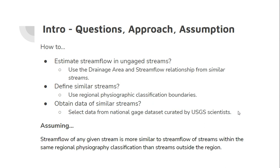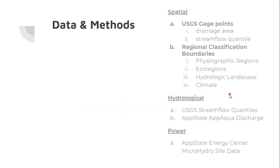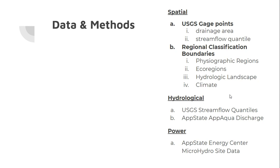To obtain data from similar streams, I found a nationwide gauge dataset curated by USGS that has stream flow statistics attached to each gauge point. The key assumption is that stream flow of any given stream is more similar to stream flow of streams within the same regional physiography classification than streams outside of that classification. I use spatial, hydrological, and power data — including that USGS gauge point dataset, regional classification boundaries, and hydrological data from the AppAqua research group at Appalachian State, which has a watershed monitoring program on the upper South Fork of the New River.